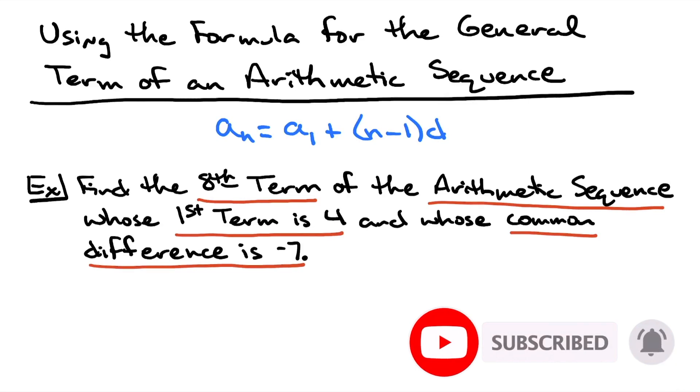So this is really a matter of plugging everything into this formula and then just working it out. I am trying to find the eighth term, so a sub 8 equals a sub 1. The first term is 4.